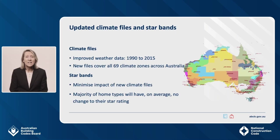The star bands, which indicate the amount of energy used for each star rating, have the potential to be impacted by the new climate files. As a result, the star bands have been recalibrated to minimise any impacts. This recalibration ensures that no particular dwelling will be disproportionately impacted by the updated climate files. As a result, the majority of dwellings will on average have no change to their star rating. Individual dwelling designs may show a small increase or decrease, but the level of impact is well within the range of normal that is expected.